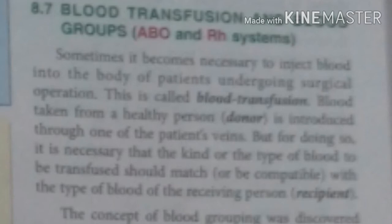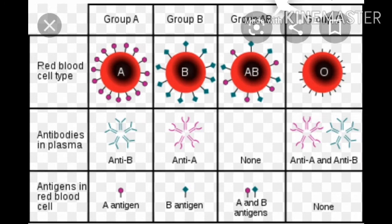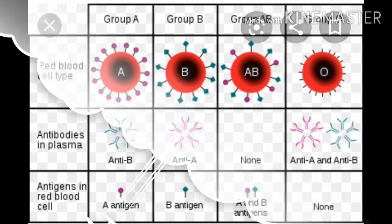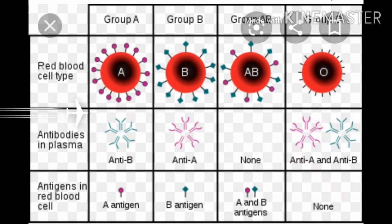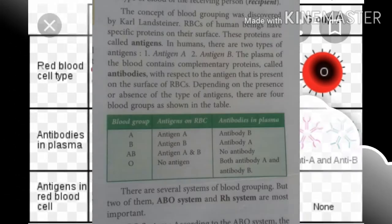RBCs of human beings have specific proteins on their surface. These proteins are called antigens. In humans, there are two types of antigens: antigen A and antigen B.